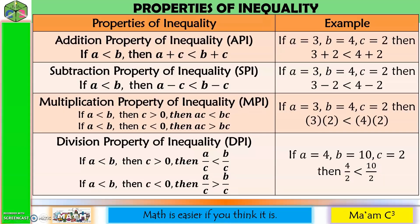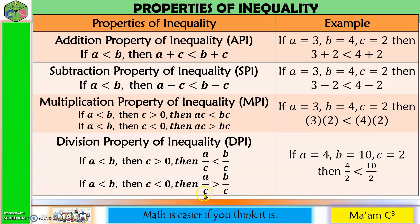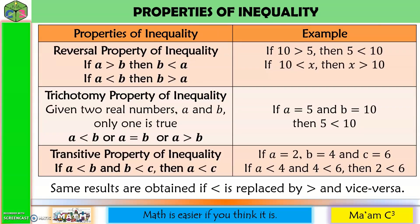Like linear equations, linear inequalities have properties too. These are similar to properties of equality, except for multiplication and division. When we multiply or divide by a negative number — numbers less than zero — the inequality symbol reverses.